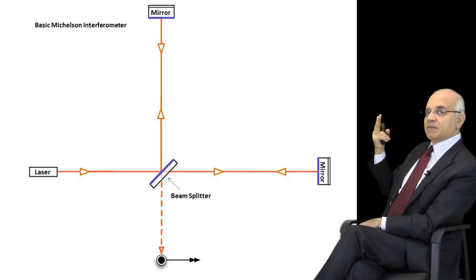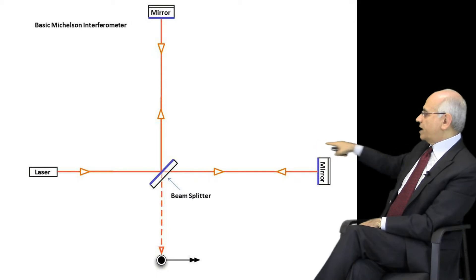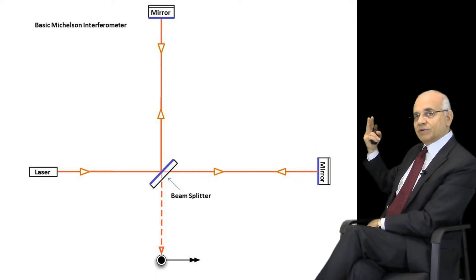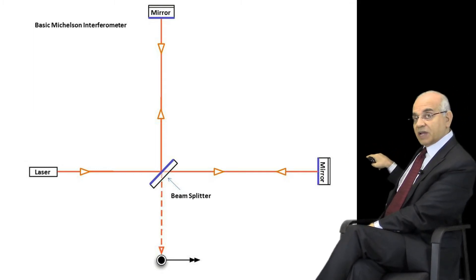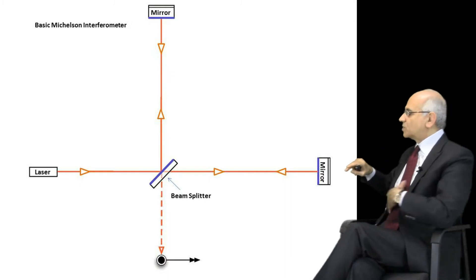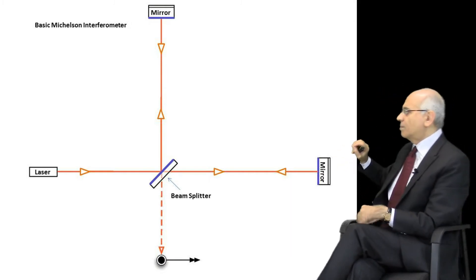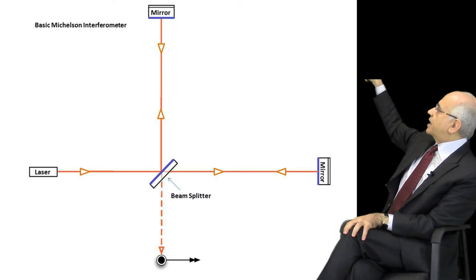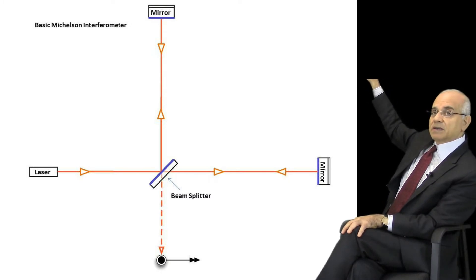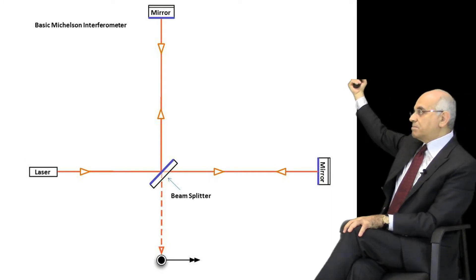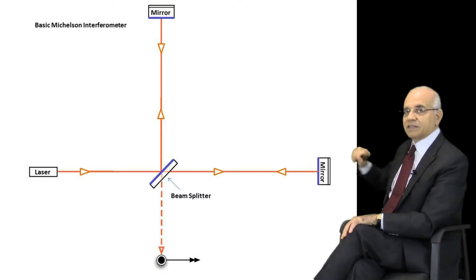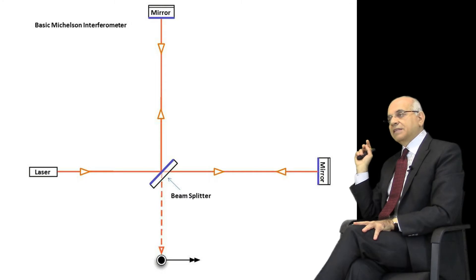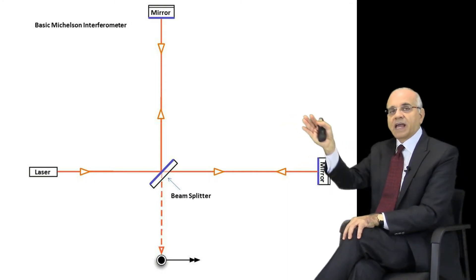So you have two beams. Originally you start with one laser beam; with the splitter you end up with two laser beams — one going up, and the other one going horizontally at a 90-degree angle, perpendicular to it, to the right. When the laser beam goes vertically, at the very end there's a mirror. That mirror reflects the beam of light back. And the same on the right — there's a mirror that also reflects the light back.